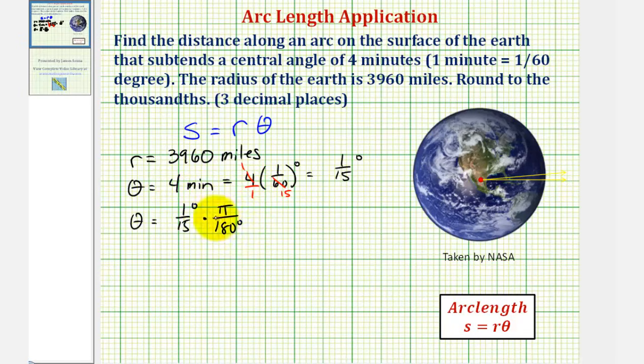Notice how the units of degrees would simplify out, leaving us with pi divided by fifteen times one-eighty, or pi divided by two thousand seven hundred, and this would be radians.